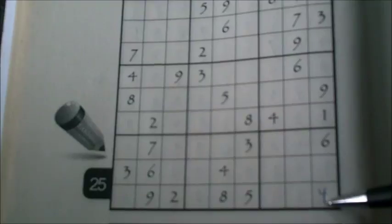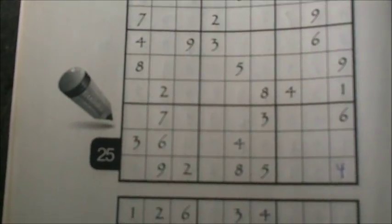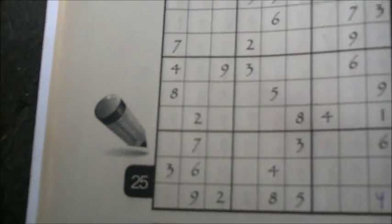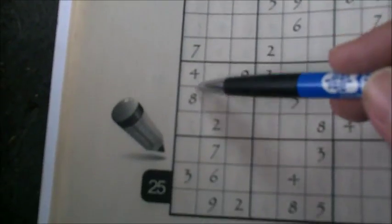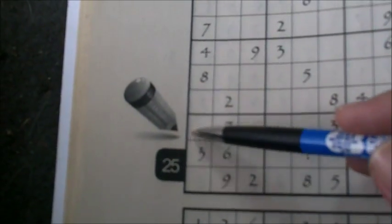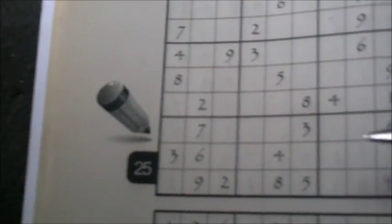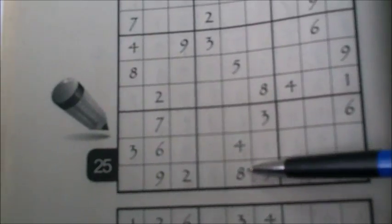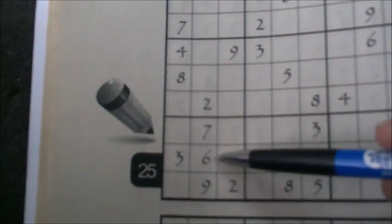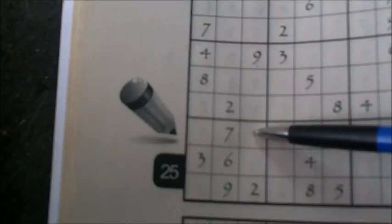Sticking with the number four, I just randomly chose it. There's a four in this row, which means this can't be a four. There's a four here, there's a four there, which means this has to be a four.